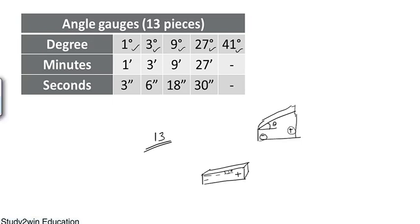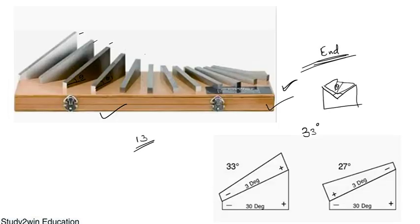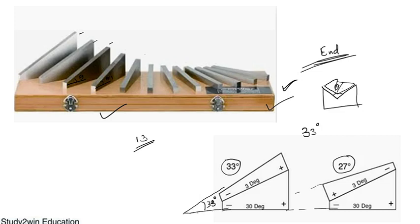To add angle gauges together, match the minus sign with minus and plus sign with plus. For example, a 30-degree and a 3-degree angle gauge, ringing with minus matched to minus, gives 33 degrees. If we match plus with minus instead, we get a difference: 30 minus 3 equals 27 degrees. This is how we add or subtract angle gauges to achieve the required angle block.